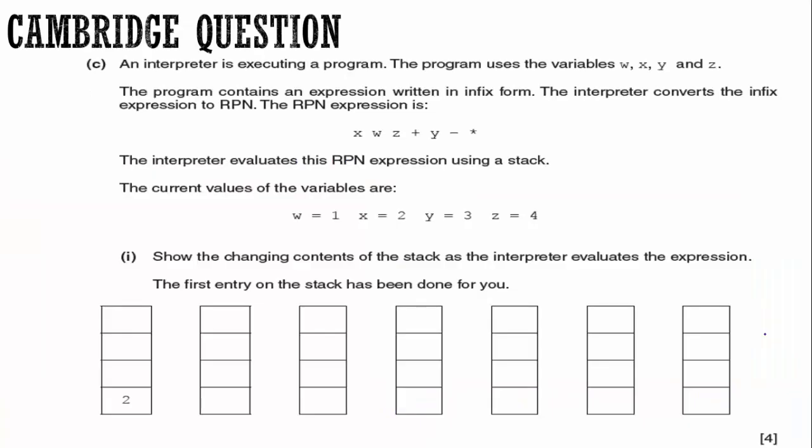Now this is a Cambridge question. This is from a 2016 paper three. I believe it was a region three. Again, I think it was in November. It doesn't really matter. So it says, an interpreter is executing a program. The program uses the variables W, X, Y, and Z. The program contains an expression written in infix form. The interpreter converts the infix expression to RPN. And the RPN expression is this right here, X, W, Z plus Y minus asterisk. The interpreter evaluates this RPN expression using a stack, which we just did. The current values of the variables are W equals one, X equals two, Y equals three, and Z equals four. Simple enough.